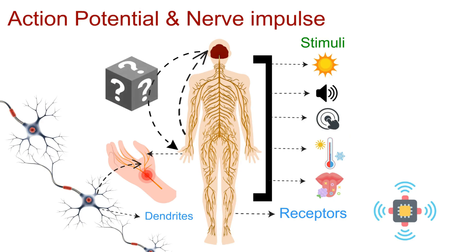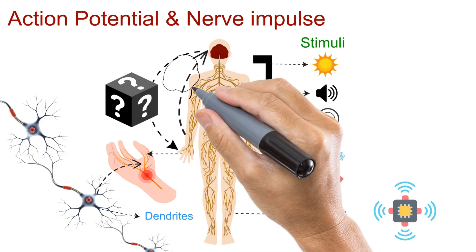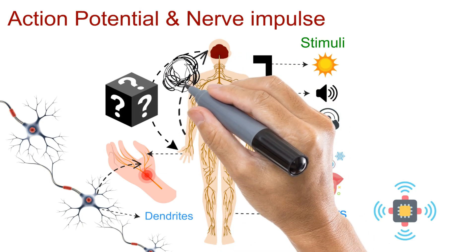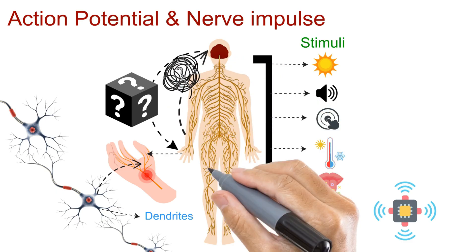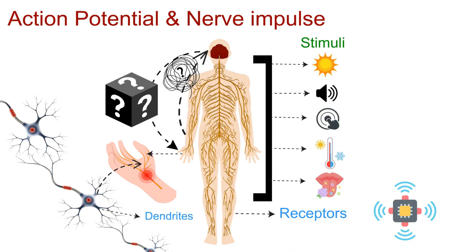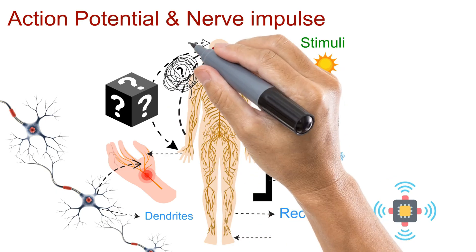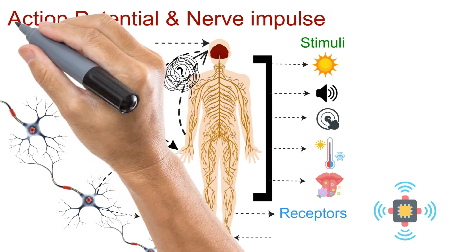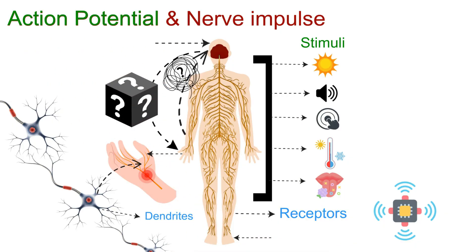But the real mystery is this: what happens inside these nerves? How do these electrical signals actually travel from one end to the other? That's where the concept of action potential begins.